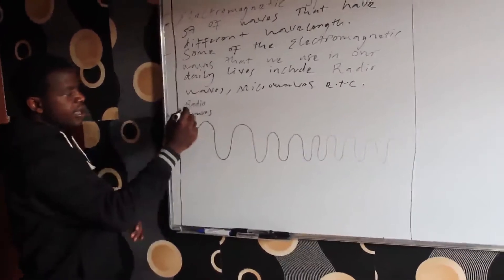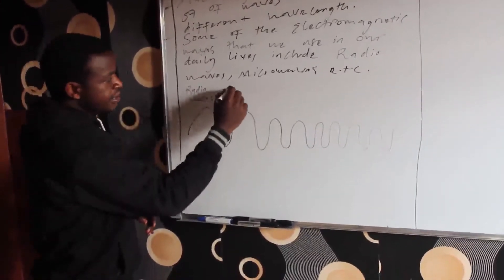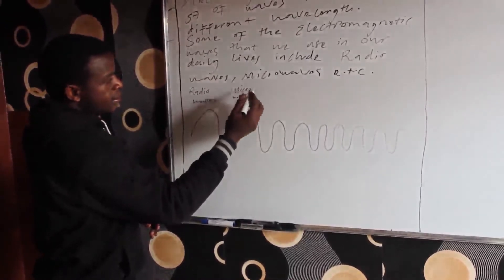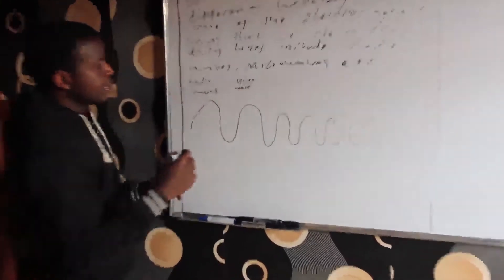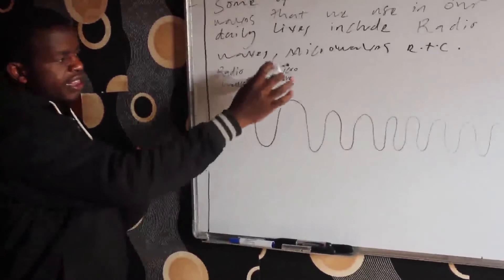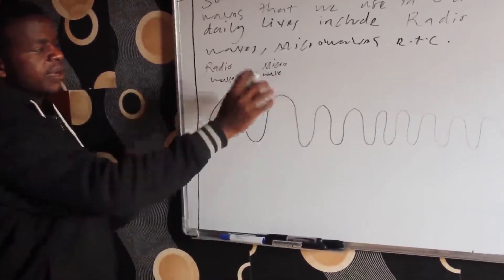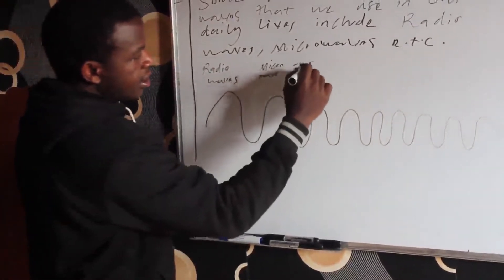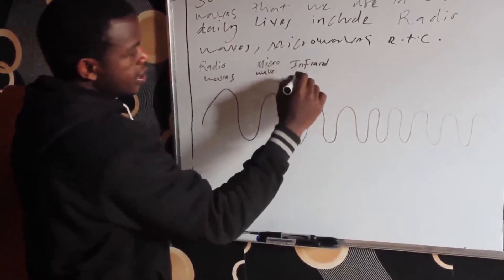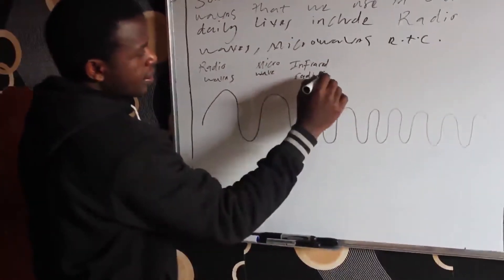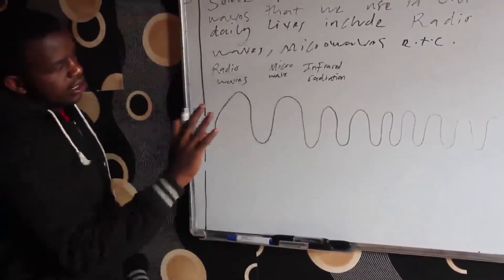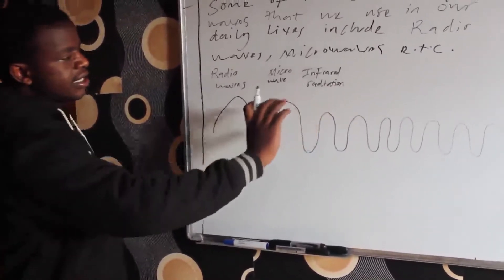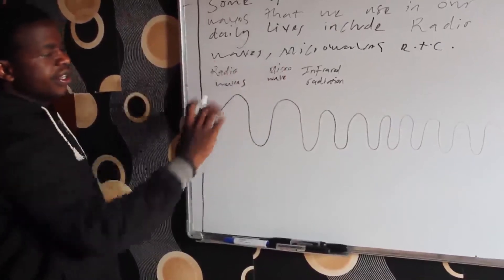Coming after the radio waves, we have the microwaves. The wavelength of the microwaves is also large, but it's not larger than that of the radio waves. Then we have the infrared radiation. These also have a large wavelength, but their wavelength is less than that of the microwaves and the radio waves.